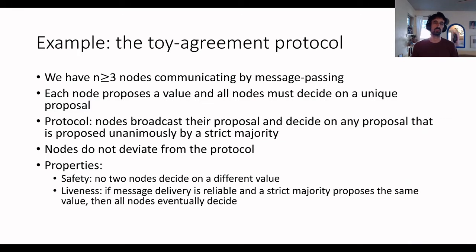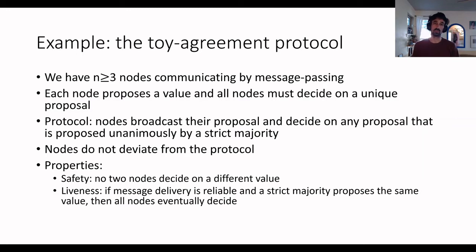I will now demonstrate how protocol verification works in IVY using a simple example: the toy agreement protocol. We have a set of nodes communicating by message passing. Like in consensus, each node proposes a value and all nodes must decide on a unique proposal. Every node broadcasts its proposal to everyone, and a node decides on a value when that value has been proposed unanimously by a strict majority. We suppose that nodes do not deviate from the protocol. Two strict majorities must have a node in common, so we cannot have two strict majorities voting for two different values, since that would mean the common node proposed twice.